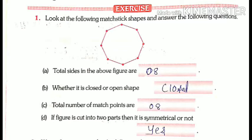Question C: total number of match points are. Here we can clearly see that when we join 8 sides with each other, there will be a point at each connection. When two sides meet, a point is created there. As there are 8 sides in this figure, there are 8 points where the matchsticks meet.